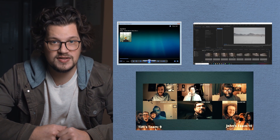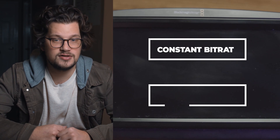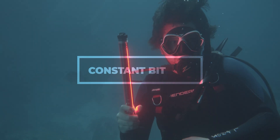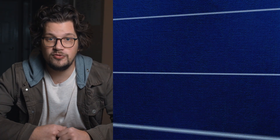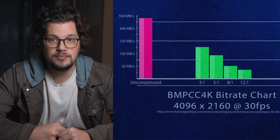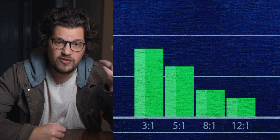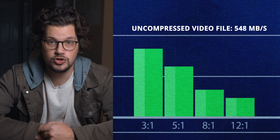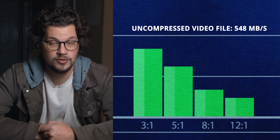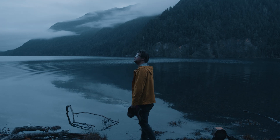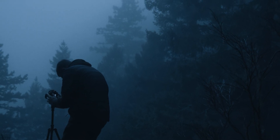Blackmagic RAW has two separate encoding settings: Constant Bitrate and Constant Quality. Each of these settings has a multitude of options to choose from. Let's start with Constant Bitrate first, which gives you predictable file sizes and high-quality images. With Constant Bitrate, you get four ratio options to choose from. For example, if you have an uncompressed file that is 548 megabytes, choosing the ratio of 5:1 will compress your file down to 110 megabytes. If you have limited space available on your drives but have a lot to shoot, the Constant Bitrate options are pretty fantastic.